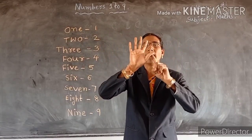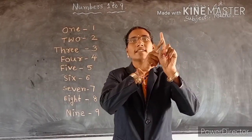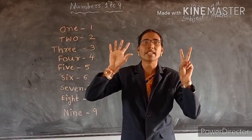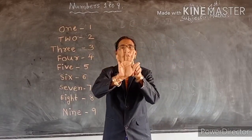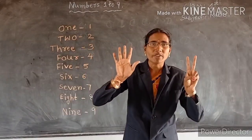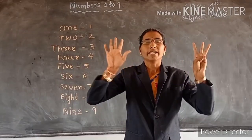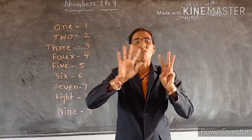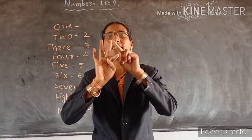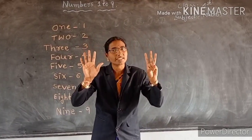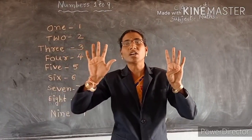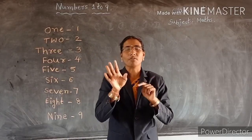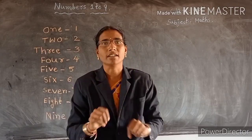Count, children. How many fingers are there? One, two, three, four, five, six. How many fingers are there? Six fingers. Count, children. How many fingers are there? 1, 2, 3, 4, 5, 6, 7. How many fingers are there, children? 7 fingers. Yes, very good. 8 fingers. 1, 2, 3, 4, 5, 6, 7, 8. How many fingers are there? 8. How many fingers are there, children? Count. 9 fingers. 1, 2, 3, 4, 5, 6, 7, 8, 9. How many fingers?